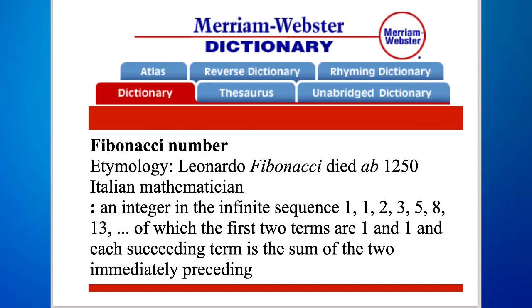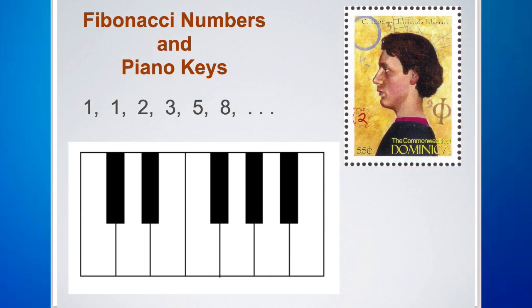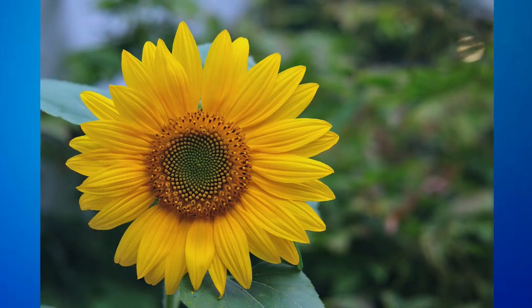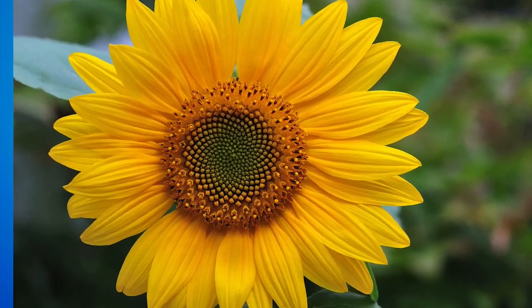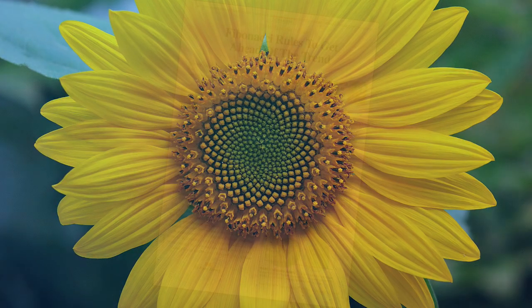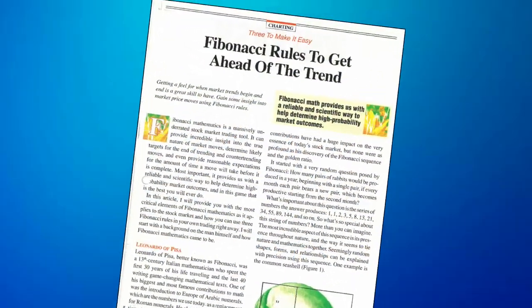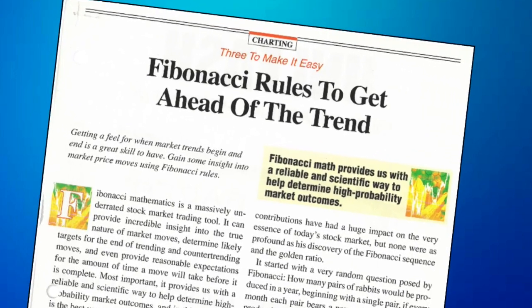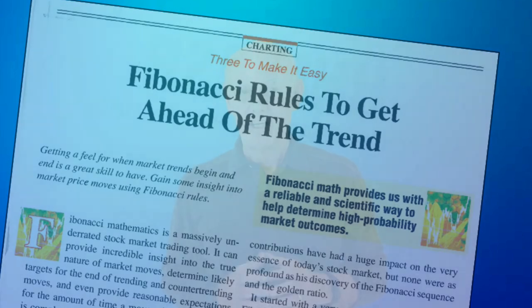The numbers of the Fibonacci sequence are called Fibonacci numbers. Here's the definition from the online dictionary. Can you see the Fibonacci sequence and Fibonacci numbers in the keys on a piano? The number of seeds in each spiral of seeds in a sunflower is always a Fibonacci number. Here's an article a friend of mine sent to me about how changes in the stock market are modeled with Fibonacci numbers. It turns out that many things in the world around us, both man-made and natural, organize themselves according to the Fibonacci sequence and Fibonacci numbers.